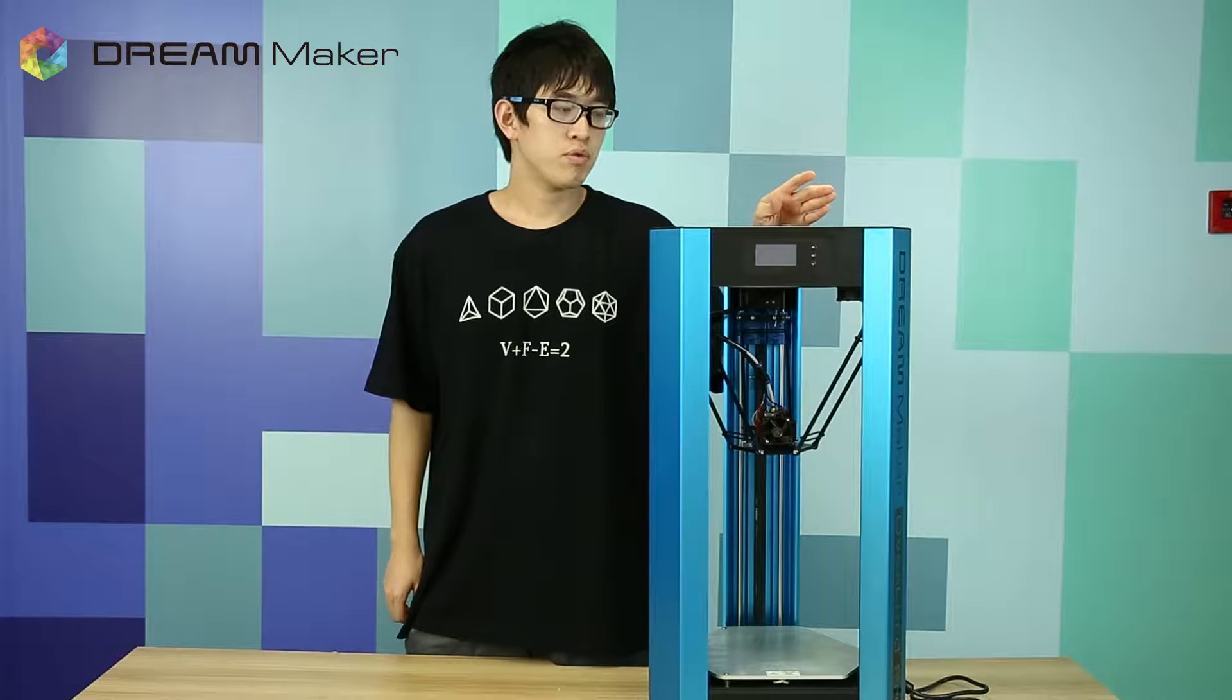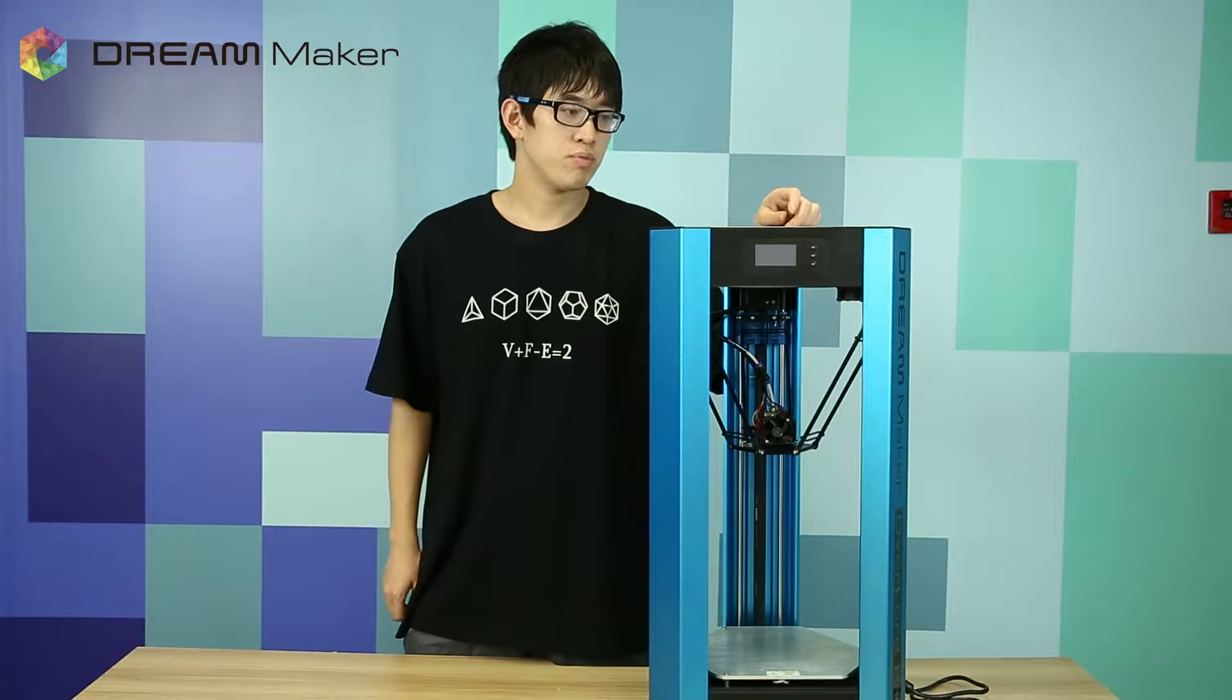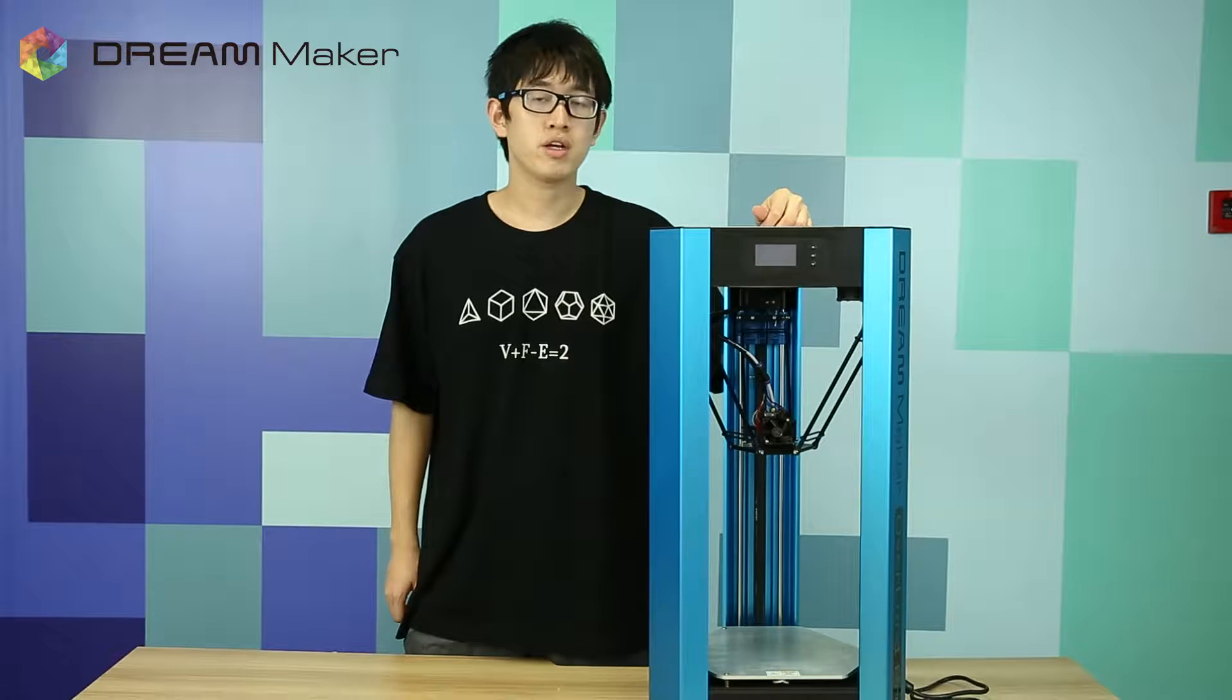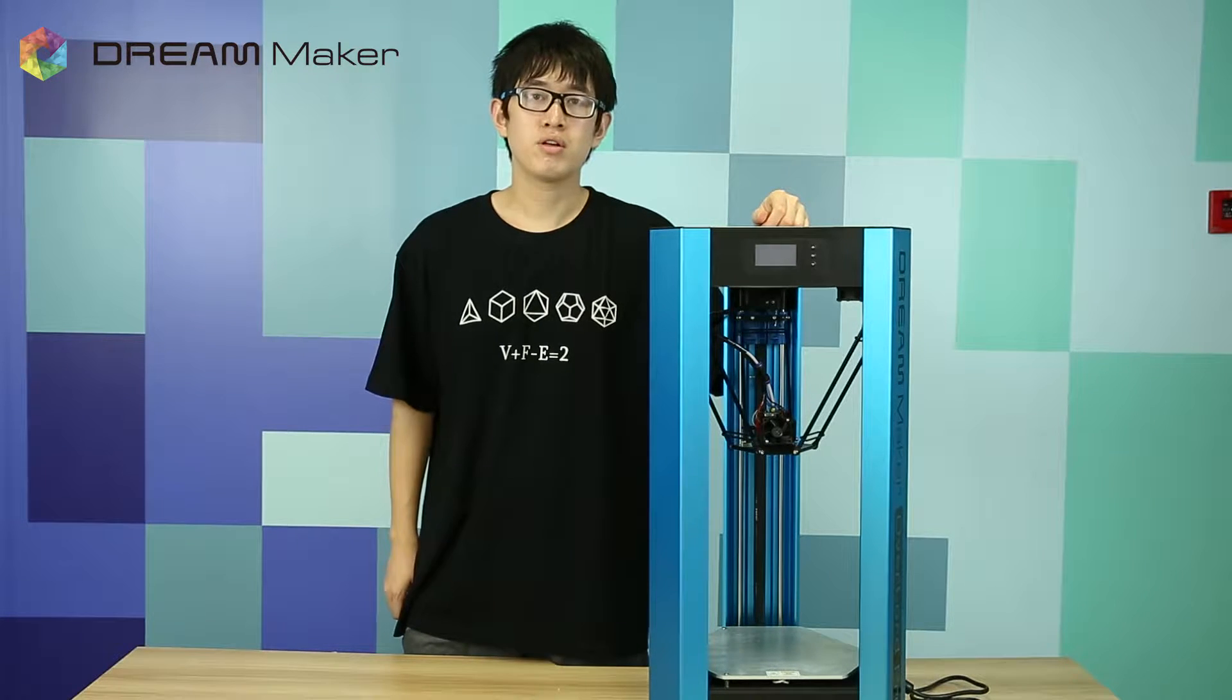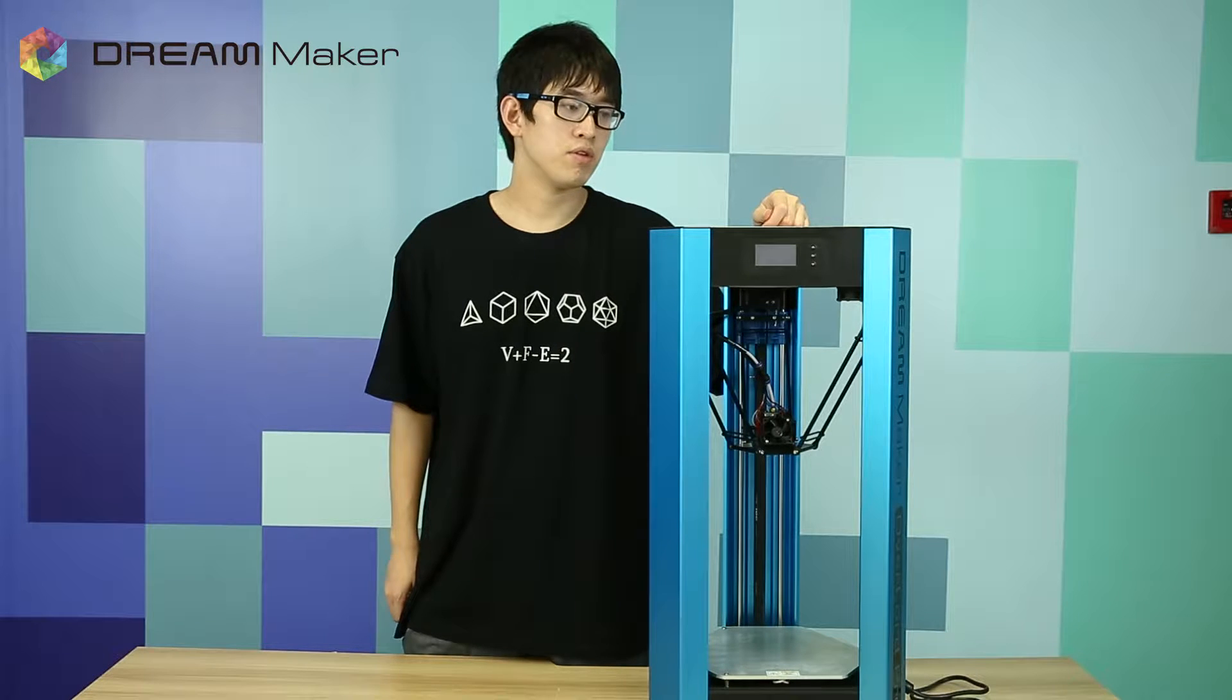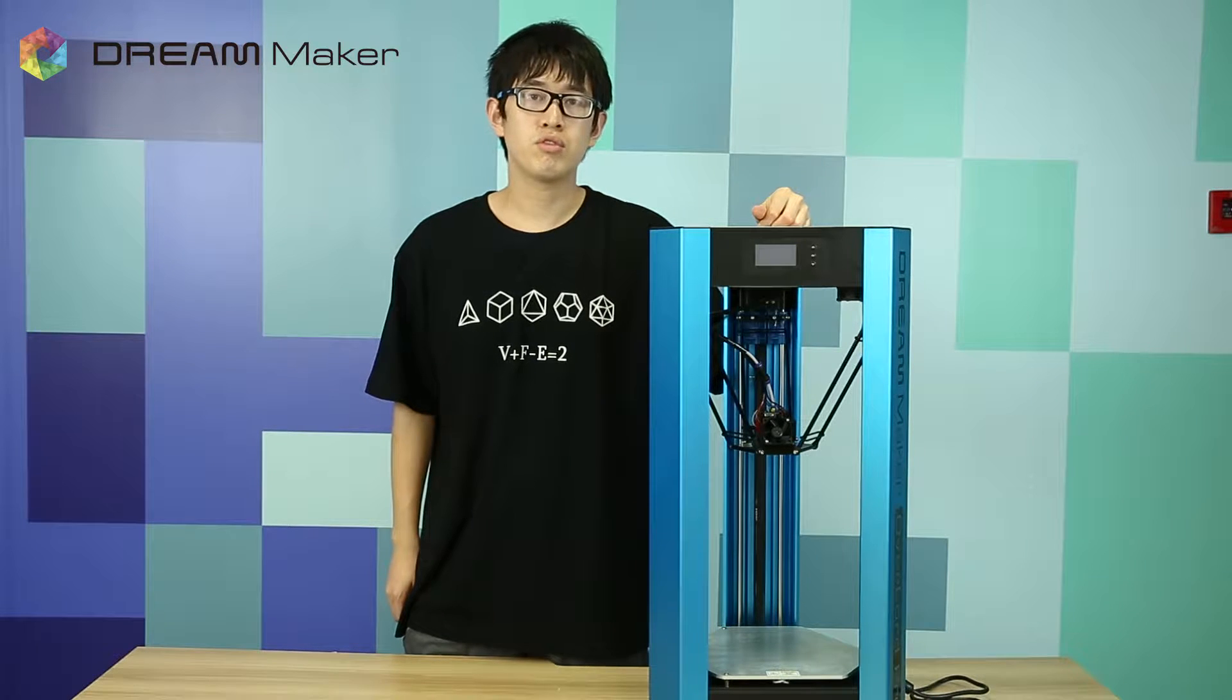The extruder sits on the top of the printer. This is a structure which pushes the filament into the printing head. When a filament is stuck inside the extruder, you will need to disassemble the extruder and remove the filament.